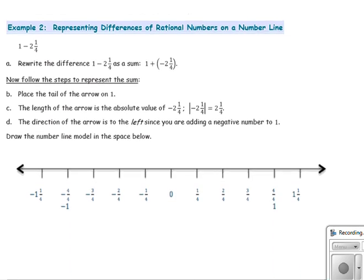Example 2: our problem is 1 minus 2 and 1 fourth. First, we rewrite the difference as a sum — the two changes are to change subtraction to addition and to use the opposite of the addend — giving us 1 plus negative 2 and 1 fourth. Now we follow the steps to represent the sum. We place the tail of the arrow on the first addend, positive 1, and then the arrow for the second addend will be 2 and 1 fourth units long, pointing to the left since it is a negative number. It may be easier to convert 2 and 1 fourth to an improper fraction since the number line goes by fourths.